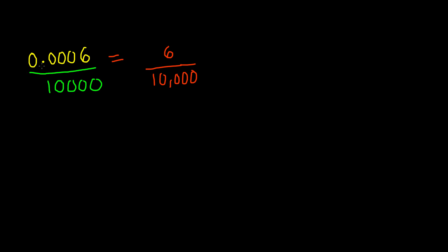All right. In this case we had zeros after the decimal point, but then there was a digit afterwards — the number 6. What if you have an example like 0.00086 followed by several trailing zeros?